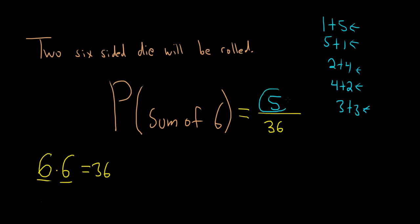The probability of getting a sum of six is the number of ways to get a sum of six divided by the number of ways to roll two die. So the answer is five over 36, and that's the final answer.